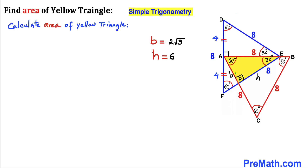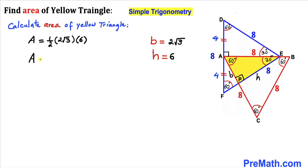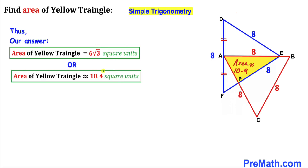Now for the final step: the area of the yellow shaded triangle using A = ½ × base × height, where base B = 2√3 and height H = 6. So area A = ½ × 2√3 × 6 = 6√3 square units. Thus the area of this yellow shaded triangle is 6√3 square units, which is approximately 10.4 square units. Thanks for watching and please don't forget to subscribe to my channel for more exciting videos.